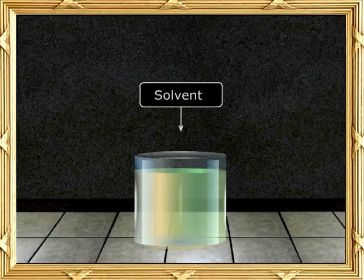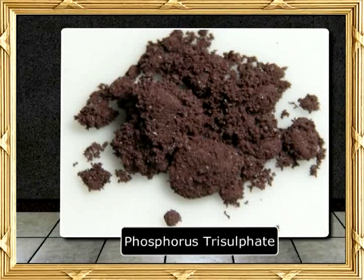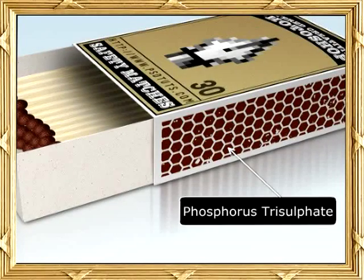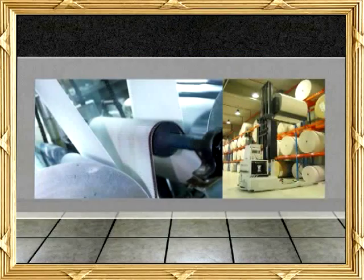It is used in the manufacture of phosphorus trisulphate, which in turn is used in the matchbox industry. Calcium sulphide is used as a bleaching agent in the paper industry as well.